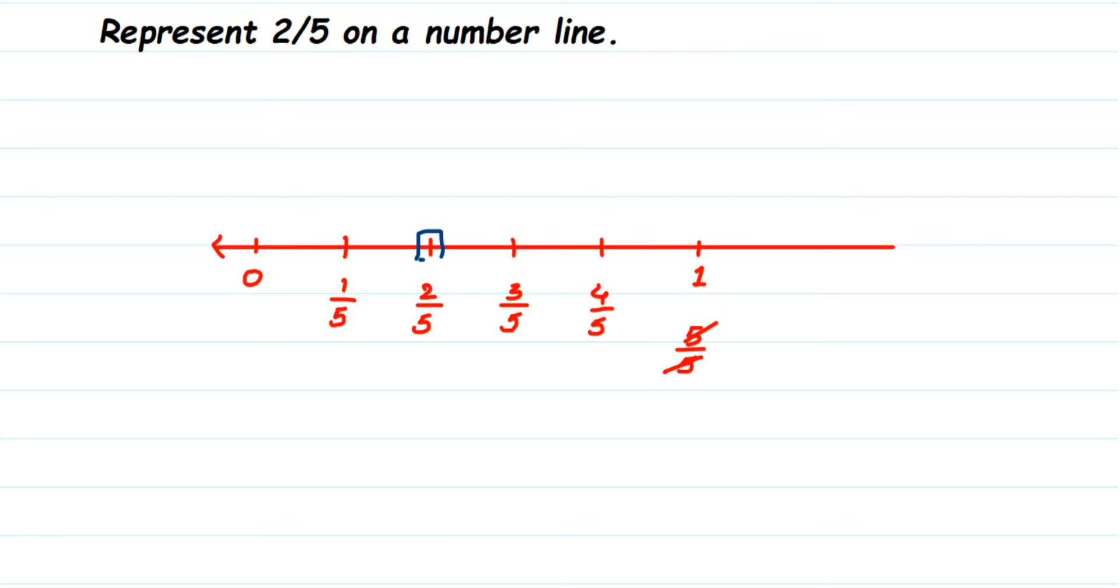Now since this number is a proper fraction, right? Proper fraction means whenever the numerator is smaller than denominator we call it as a proper fraction. Proper fractions always lie between 0 and 1. That's why I have not taken more numbers here. I have not taken 1 and 2 because I know this number will lie between 0 and 1.